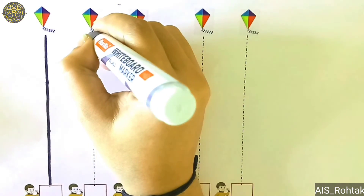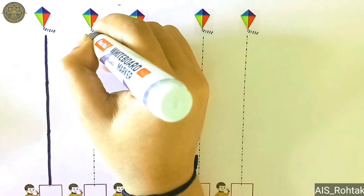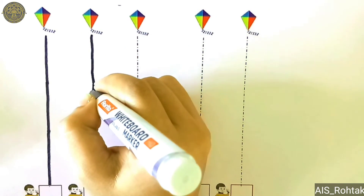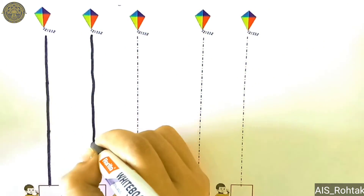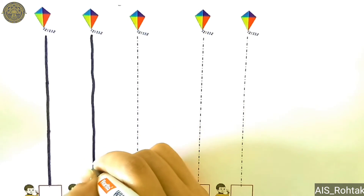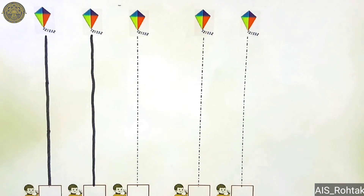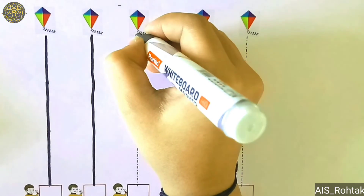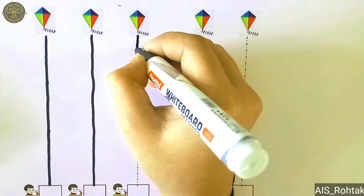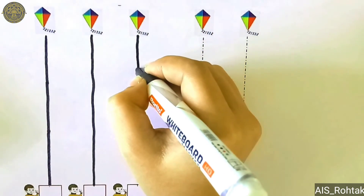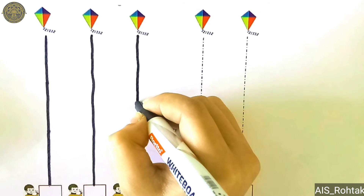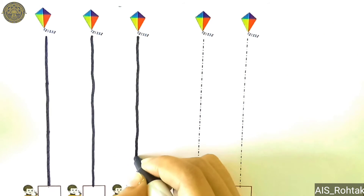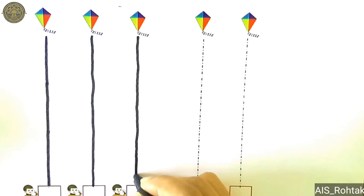Start from up. Go down, down, down, down, down and down. Start from up. Go down, down, down, down, down, down, down and down.